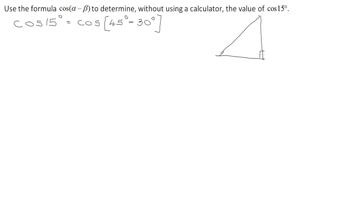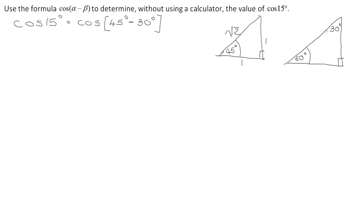For the 45° right-angle triangle, the sides are 1, 1, and √2. For the 30°–60°–90° right-angle triangle, the sides are 2, 1, and √3 (by Pythagoras). These two triangles are very important for finding the required values.